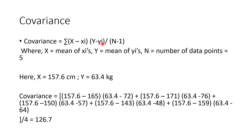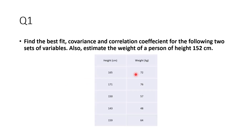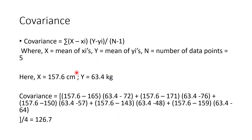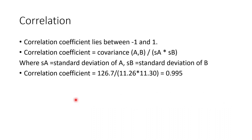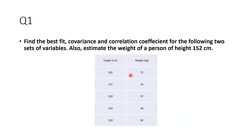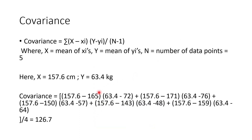Here the mean of x values is 157.6 and the mean of y is 63.4 — you calculate these by hand from the values. Then for covariance you substitute into the formula. For example, the first xy pair is 165 and 72, so x̄ minus x₁ is 157.6 minus 165, and ȳ minus y₁ is 63.4 minus 72. That gives you your first term.